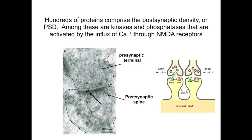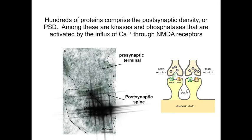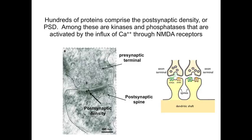The electron micrograph shows both the presynaptic ending made by the axon terminal and the postsynaptic spine. Notice the density in the postsynaptic spine, just below the axon terminal. The density contains hundreds of different proteins. Among these are phosphatases, such as calcineurin, and the kinases, such as CAM kinase 2, that are activated by the influx of calcium through NMDA receptors when the synapse is activated.